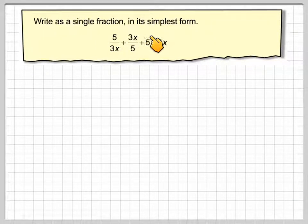Right, as a single fraction in its simplest form, 5 over 3x plus 3x over 5 plus 5 plus 3x.